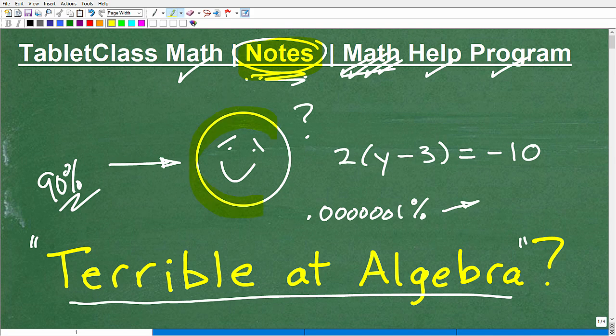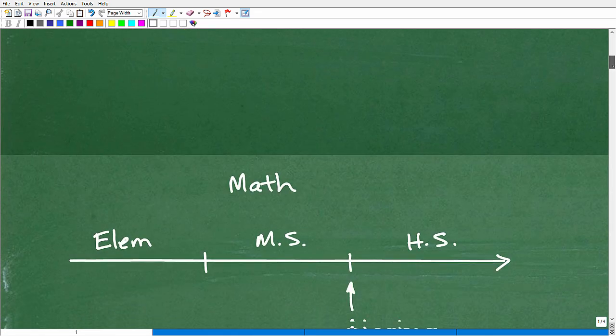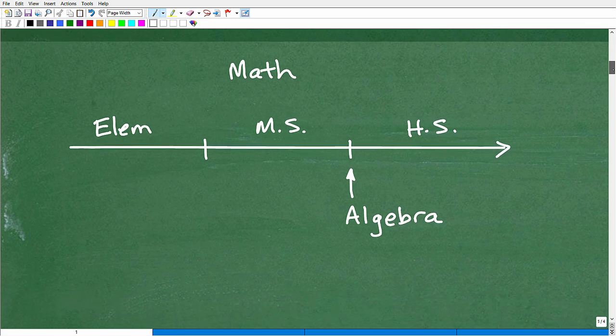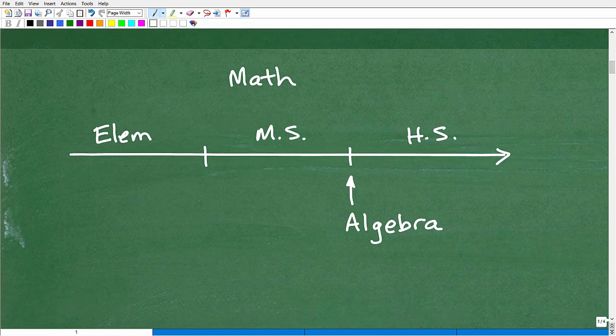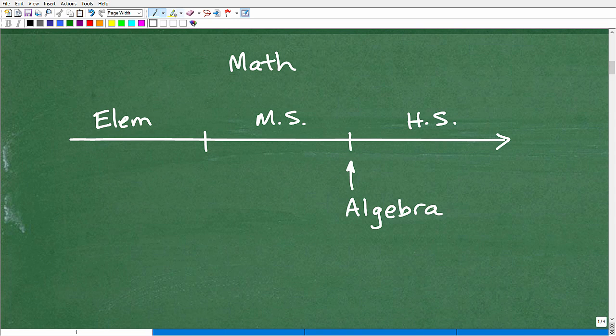All right. So let's talk about how we can get you to get a smiley face when you're dealing with stuff like this. So terrible at algebra. Let's get into this. So first of all, let's just take a look at your kind of math history. So if you're taking algebra, most people take algebra right about here, at the end of middle school, but really the majority of you at the beginning of high school.